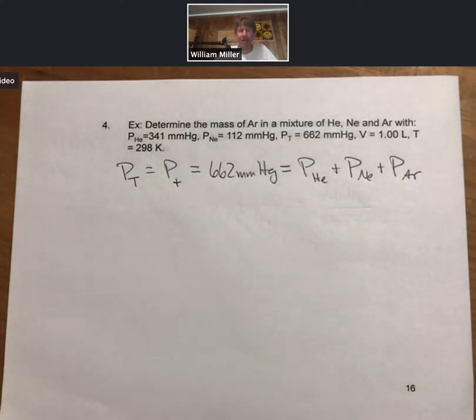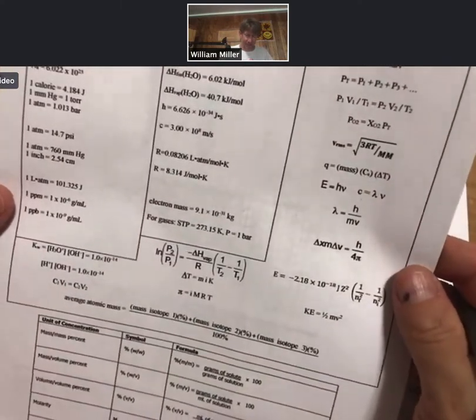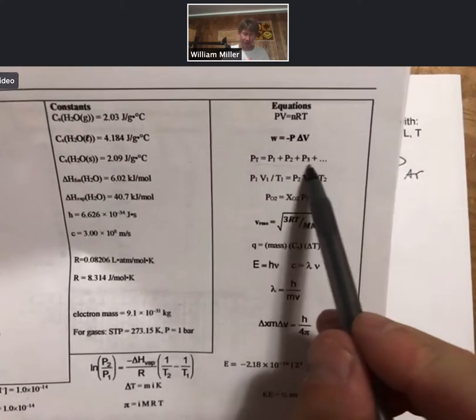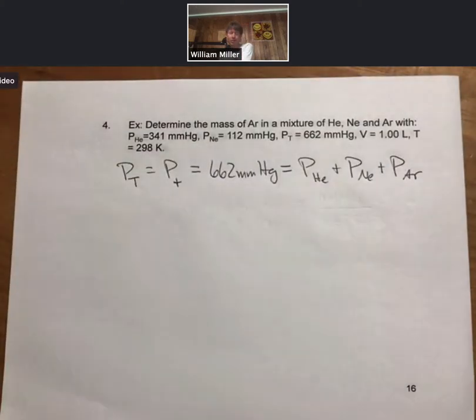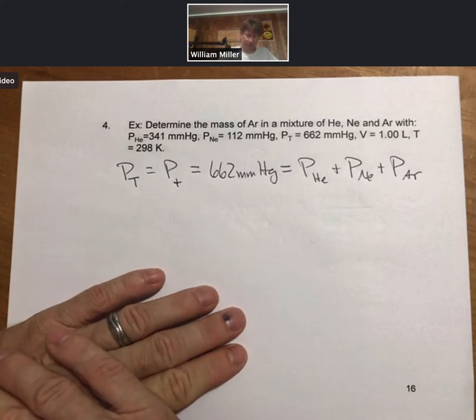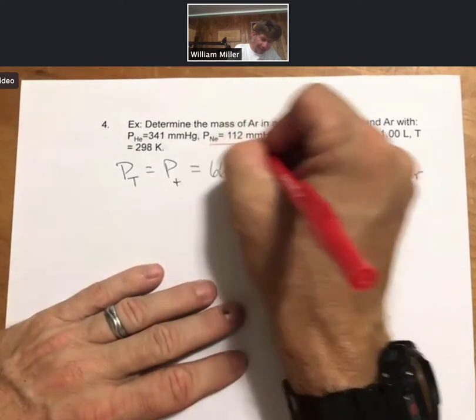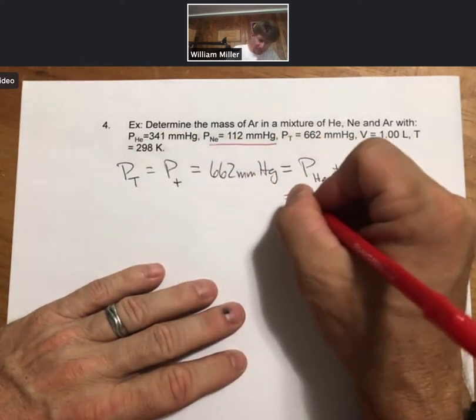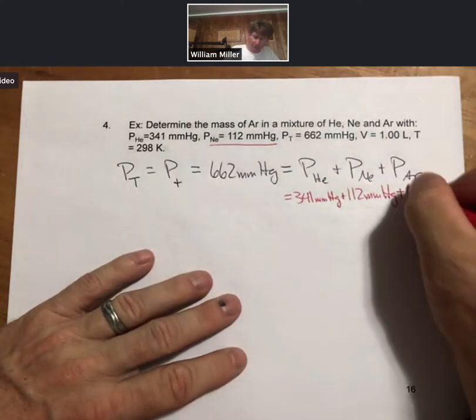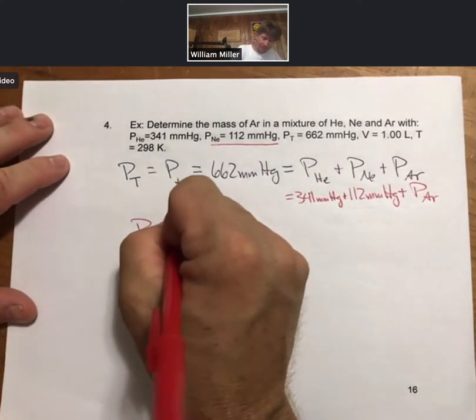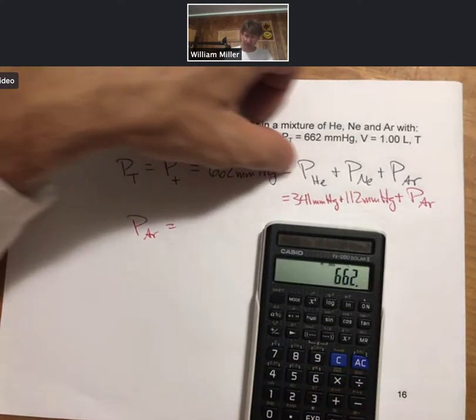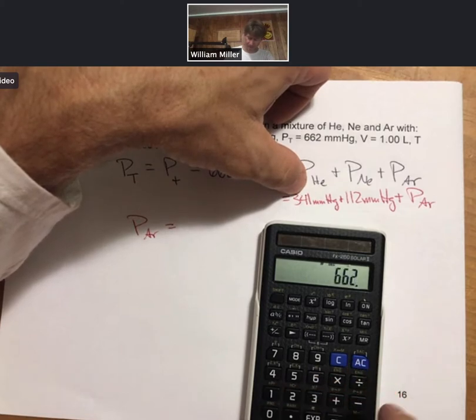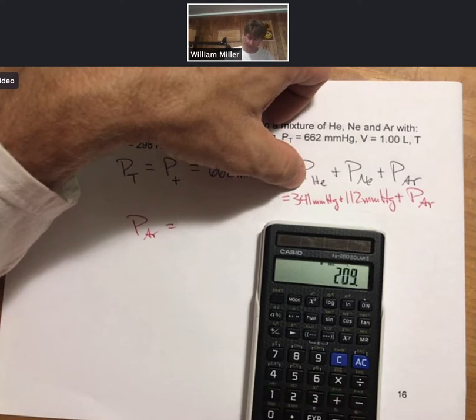And these problems oftentimes are pretty plug and chug, meaning if you know the right equation to write, you can write that down and then fill it in. There is Dalton's law of partial pressures. There is the ideal gas law. And we have a bunch of other equations coming up. So these are on your conversion equation sheets. So we know that the partial pressure of neon is 112 millimeters of mercury. We know that the partial pressure of helium is 341. We don't know the partial pressure of argon, but we can solve for it. It's going to be 662 minus the partial pressures of our other gases. 209 millimeters of mercury.